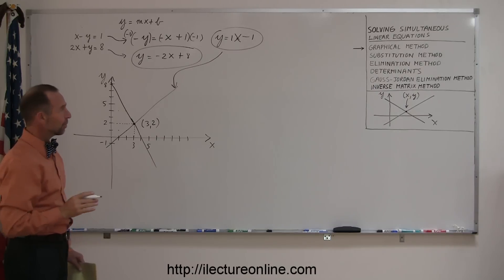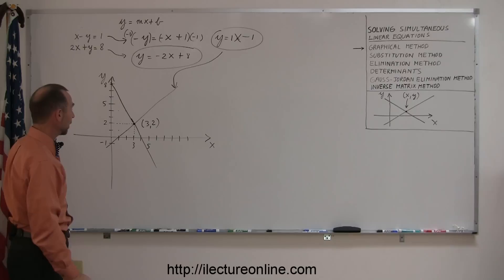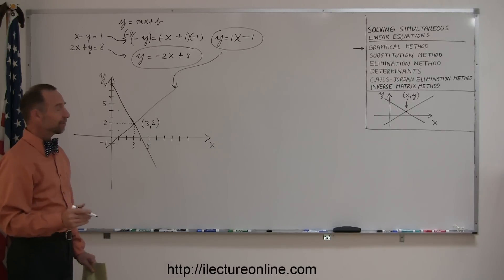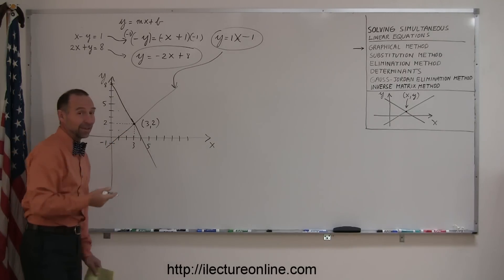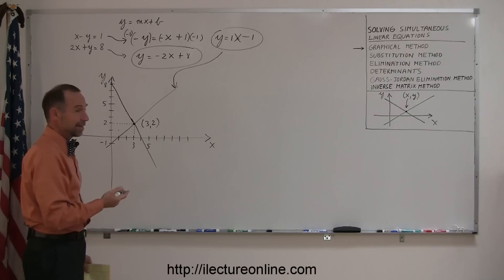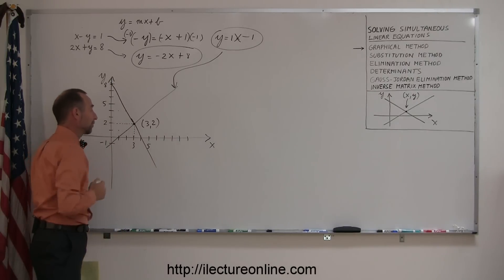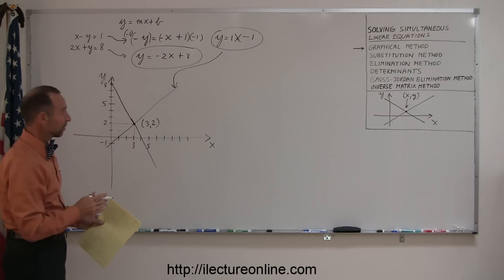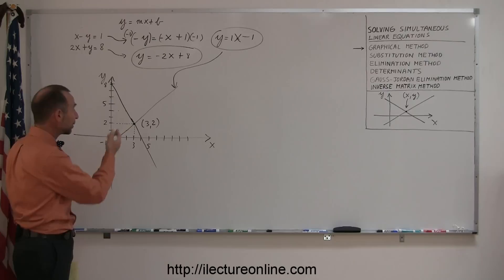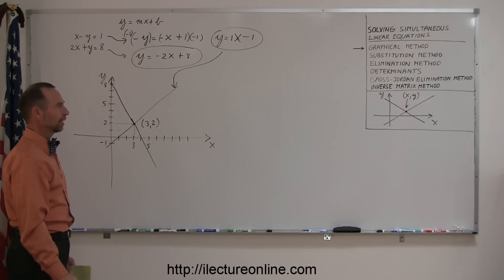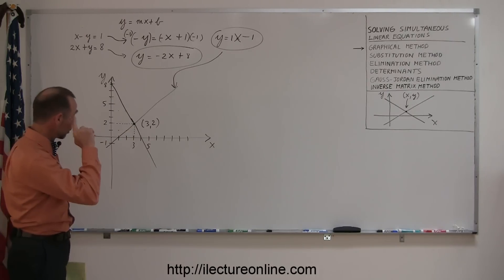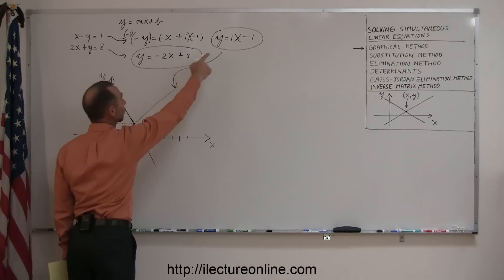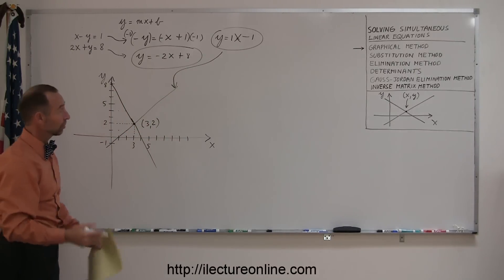Now, you might have already noticed that this method, even though it's very straightforward and it's visually easy to follow, it may not always give you the exact answer because what if the answer was 3.1 and 2.3? You probably wouldn't be able to figure that out here. So it only gives you sometimes an approximate answer. In this case, 3 and 2 are probably the correct answers. If you want to make sure that you got the right answer, you can plug these points back into both of these equations and see if the equation still holds true.